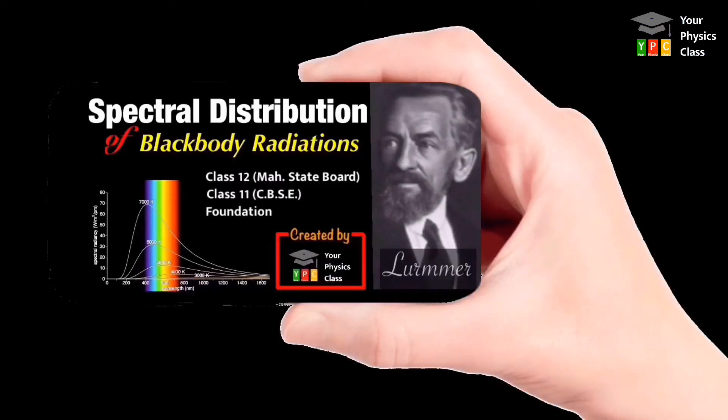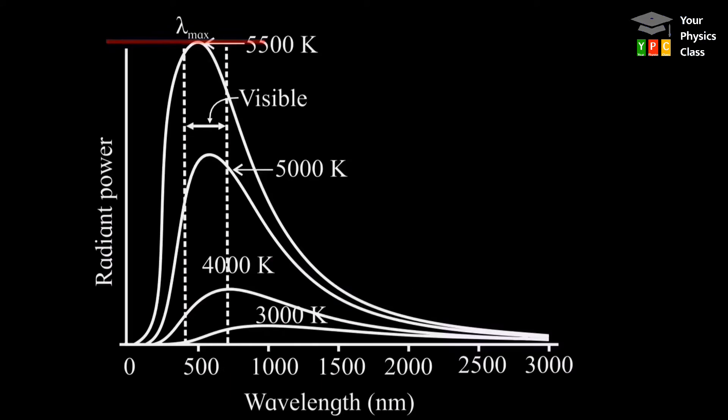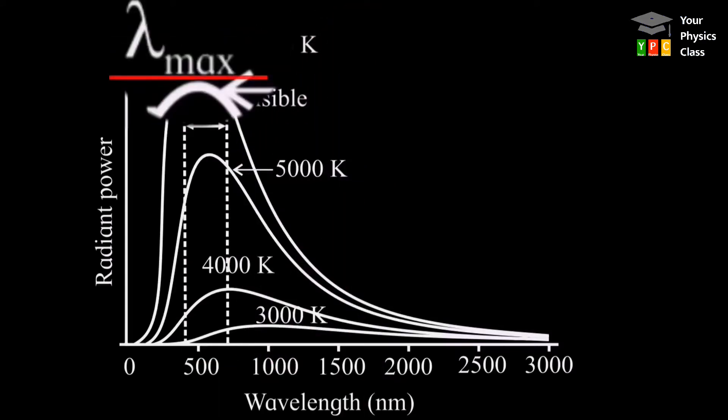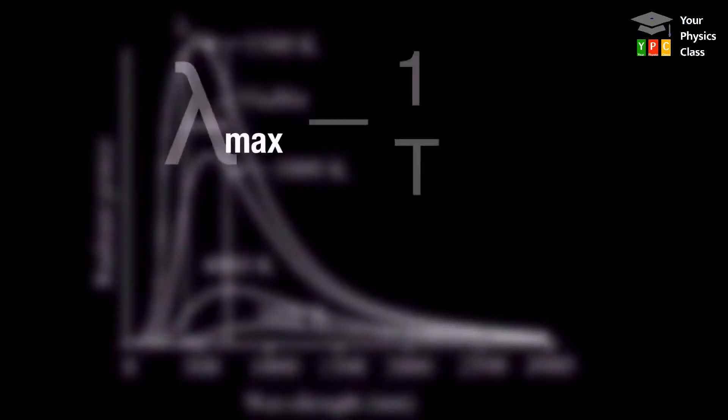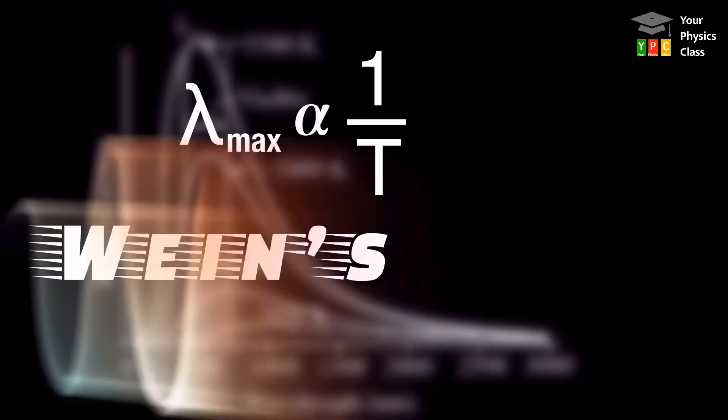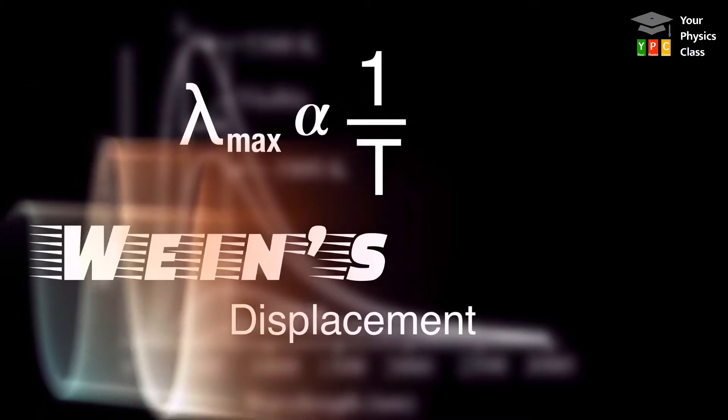In the previous video class, we learned that the wavelength corresponding to maximum radiant power is denoted by lambda max. It is observed that lambda max is inversely proportional to the absolute temperature of the black body. This is Wien's displacement law.